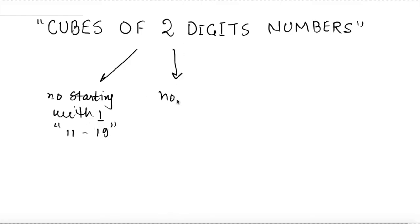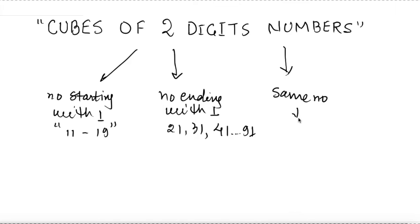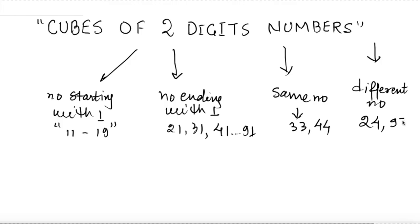In the technique I'm going to discuss, we divide numbers into four different classes. First: numbers starting with 1, meaning 11 to 19. Second: numbers ending with 1, such as 21, 31, 41 up to 91. Third: same-digit numbers like 33, 44, 55, and so on. Fourth: different numbers where the unit digit and tens digit don't match, like 24, 97, or 56.